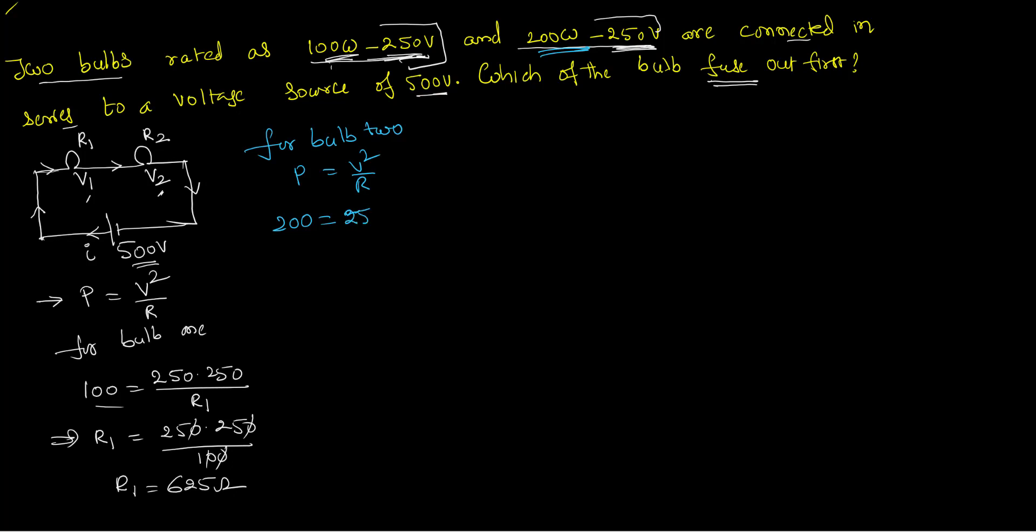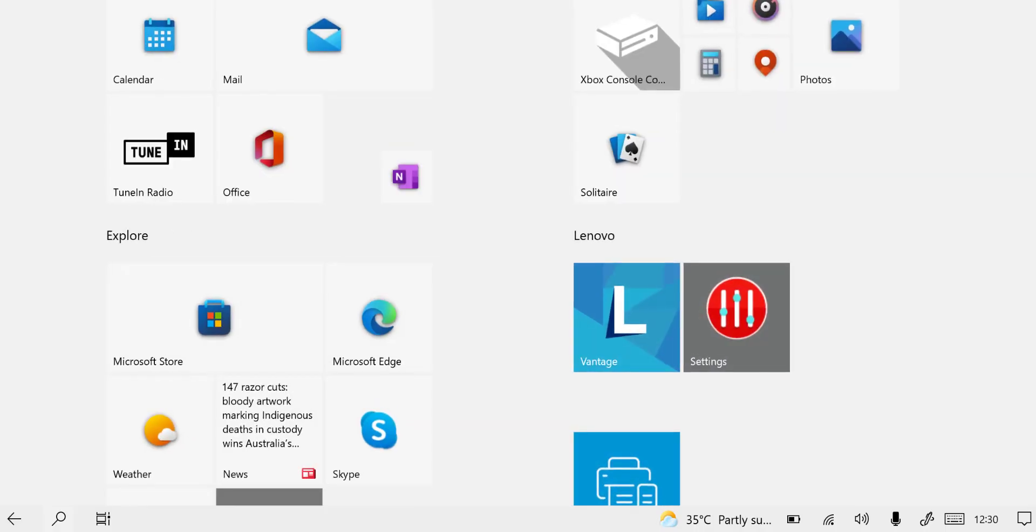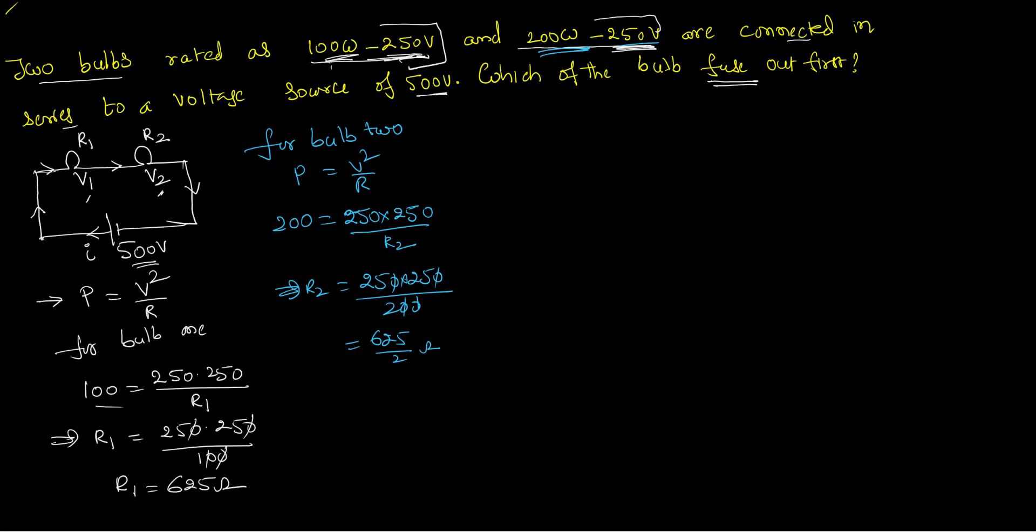V square is, it is designated for 250 volts by what is its respective resistance. I have to calculate that. Let me calculate the resistance R2 here. 250 and 250 by 200. Again this zero gets cancelled. This is 625 by 2 ohms.